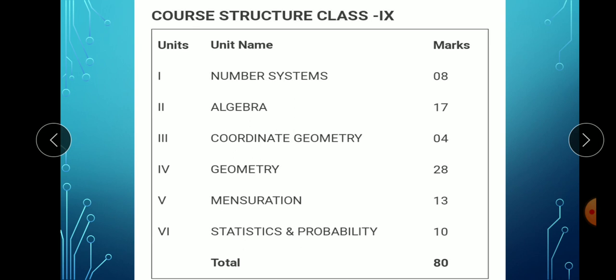Now let us look at our course structure for class 9. We have the very first unit: number system which carries 8 marks. Algebra second unit has total marks 17. Coordinate geometry has 4 marks. Geometry total 28. Mensuration 13 and statistics and probability carries 10 marks. So total 80 marks written paper is there.